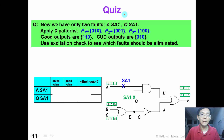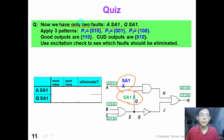It's now time for another quiz. Continuing from the last quiz problem, we now only have 2 faults to consider: input A stuck-at-1 and Q stuck-at-1. We apply the same patterns. Good outputs are 1, 1, 0 and the observed CUT outputs are 0, 1, 0. Please use step 3, excitation condition check, to determine which faults should be eliminated. Please pause your video and work on this problem.